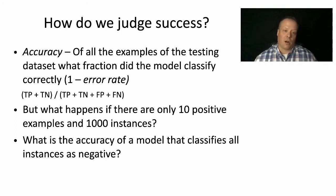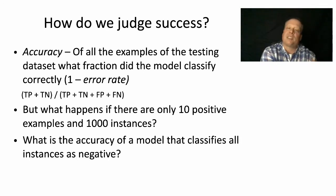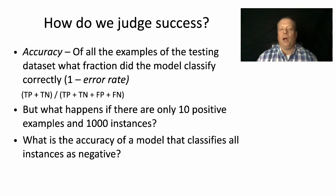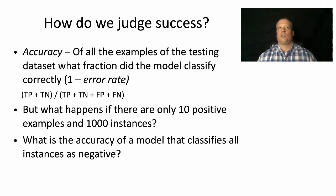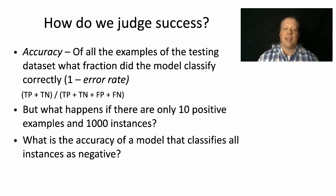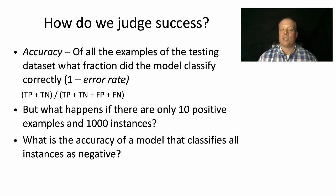Accuracy is the number of true positives plus true negatives divided by the total number of instances — true positives plus true negatives plus false positives plus false negatives. In other words, what percentage of the instances whose answer you didn't know did you predict correctly? But the problem with accuracy as a measure is: what happens if there are only 10 positive examples in a thousand instances? Any model that just predicted all instances as negative is going to have a 99.9% accuracy rate, simply because there aren't many positive instances.